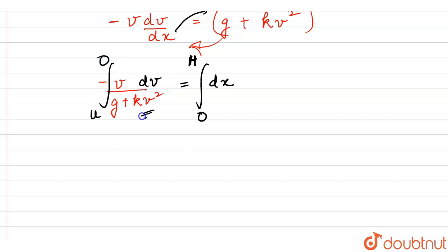This expression is a little bit tricky. Let's take g plus kv squared to be equal to t. Now let's differentiate this whole equation with respect to time. g is the acceleration due to gravity, so the differentiation would be 0 plus k is a constant.